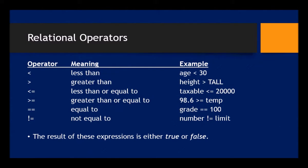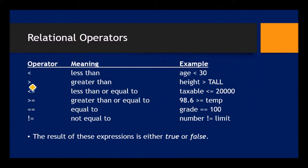In order to make decisions in C++, we have to compare things. We have relational operators that we can use for making comparisons. Let's go through them, look at some examples, and then look at how to use these in code. We have less than and greater than.